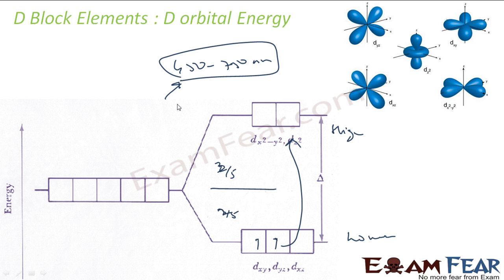For example, leaves appear green. Why? Because leaves absorb all the components of sunlight except green — they just reflect back green, and we see the green color. Same thing here with transition metals: they absorb some component from the sunlight, so the reflected light changes, the color changes. That is why d-block elements have different colors.